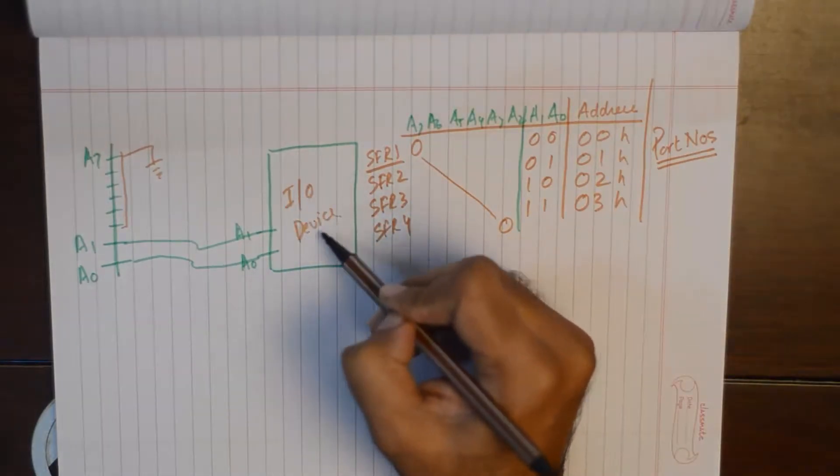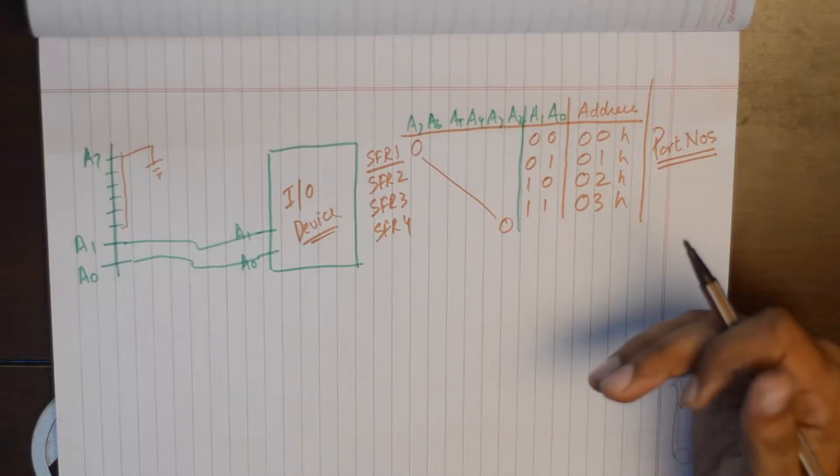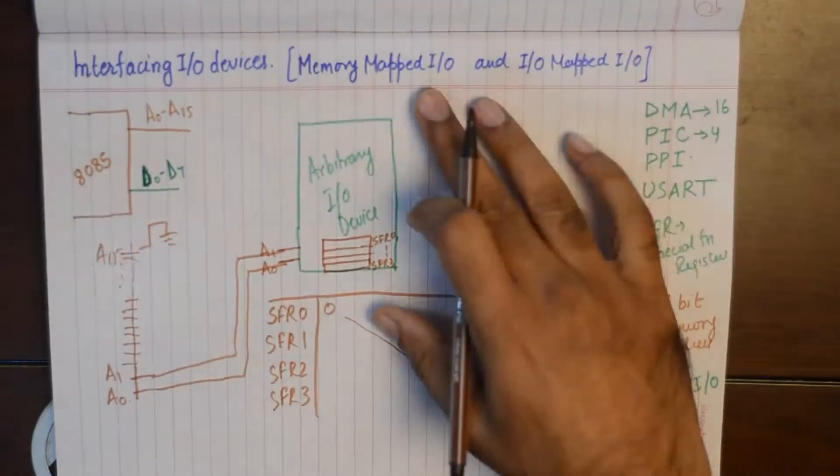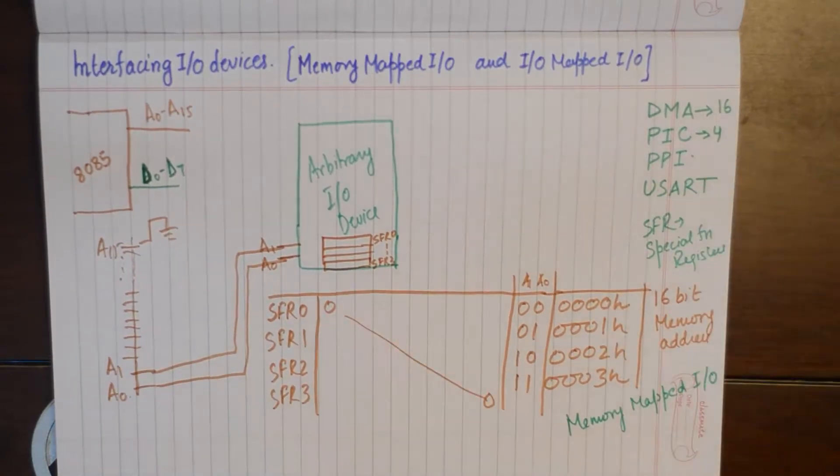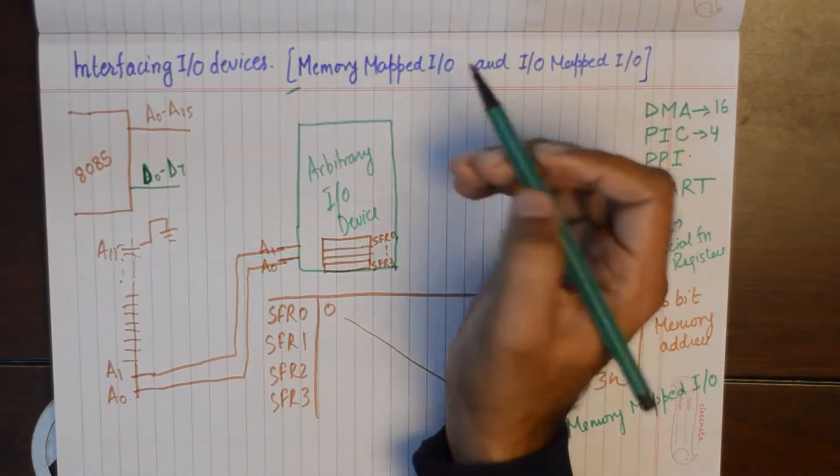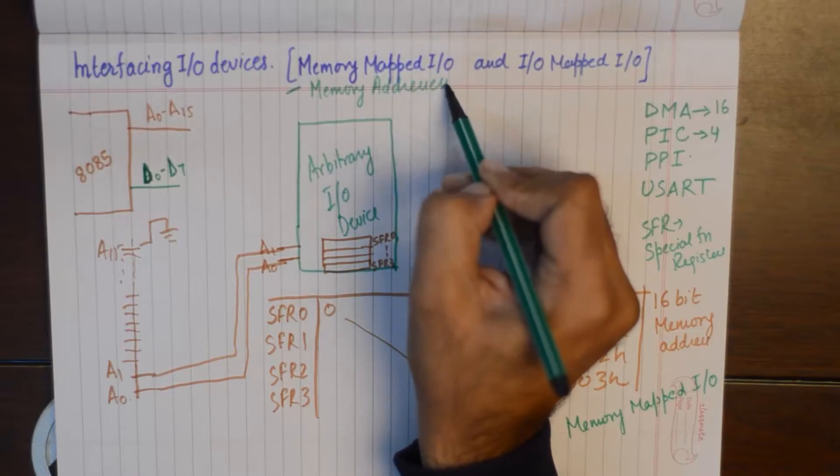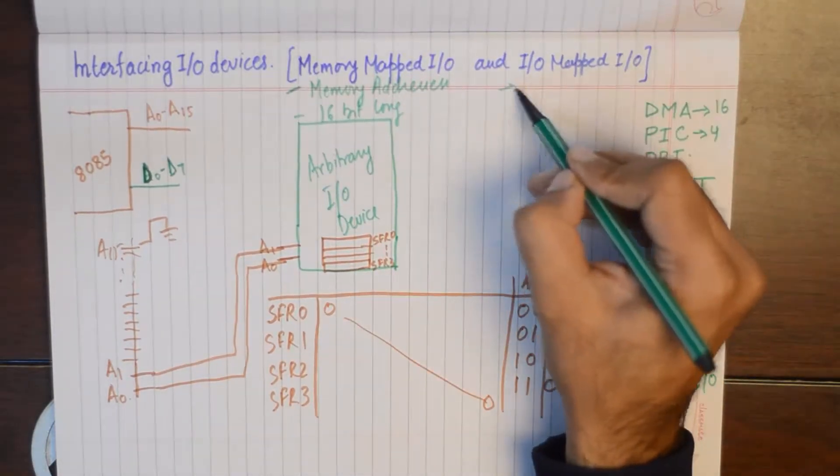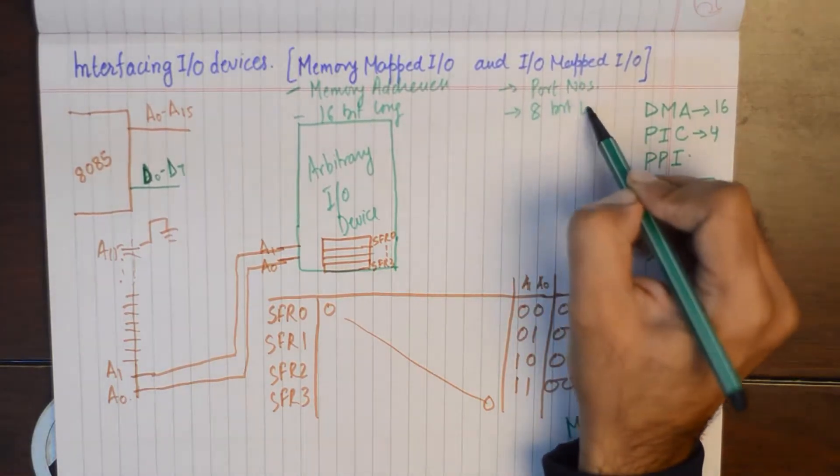Now this difference of generating a memory address or a port address is known as two different mapping techniques: memory mapped I/O and I/O mapped I/O. So to sum up, memory mapped I/O generates memory addresses and they are 16-bit long, and I/O mapped I/O generates port numbers and they are 8-bit long.